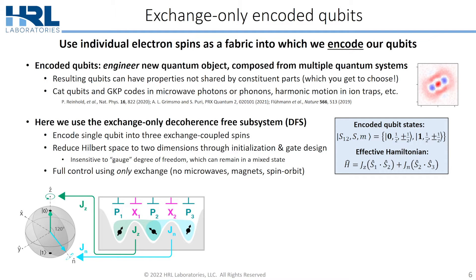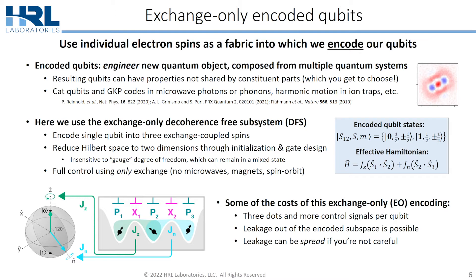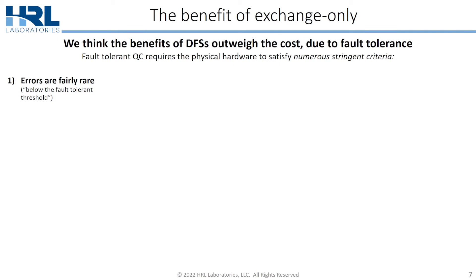The nice thing about the exchange-only DFS is that you get full control using only exchange interaction — no microwaves, magnets, or spin-orbit coupling needed. There are obvious and not-so-obvious costs: you need three electrons per qubit instead of one, leakage outside the encoded subspace can occur, and leakage can spread if you're not careful. In the device cartoon, three electrons are trapped with barriers controlled by Jz and Jn: Jz modulates a z-rotation on the Bloch sphere, and Jn causes a rotation around an n-axis 120 degrees off the Bloch sphere.